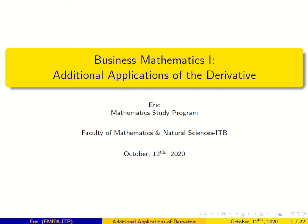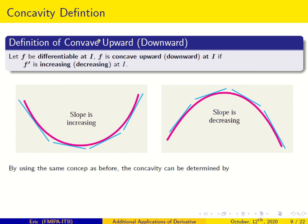This is the definition of concave upward or downward. This is concave upward, and this is concave downward. It's like a hand facing upward, or a hand facing downward. That's why we usually call it concave upward or concave downward.